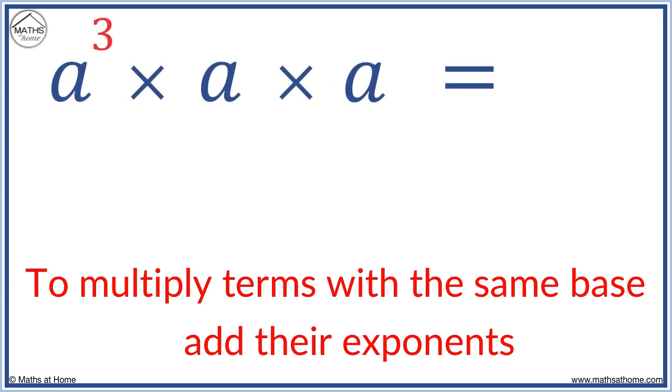In this example, the a terms secretly have exponents of 1. So, 3 plus 1 plus 1 gives us a to the power of 5.